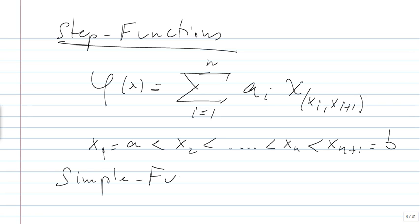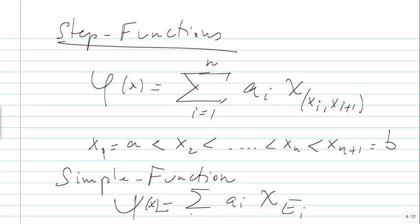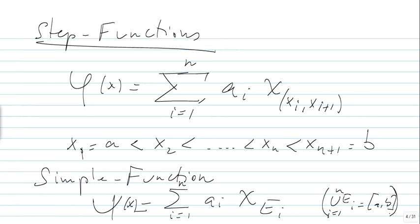For a simple function, we have the same setup except the sets are Eᵢ's — these are the characteristic functions. You have the range as a finite set of points, the aᵢ's, but the values are taken on the Eᵢ's. The union of the Eᵢ's equals [a,b]. So the step function has the inverse image of every finite value as an interval, while for a simple function, the inverse image is a measurable set Eᵢ — a set which can be anything.